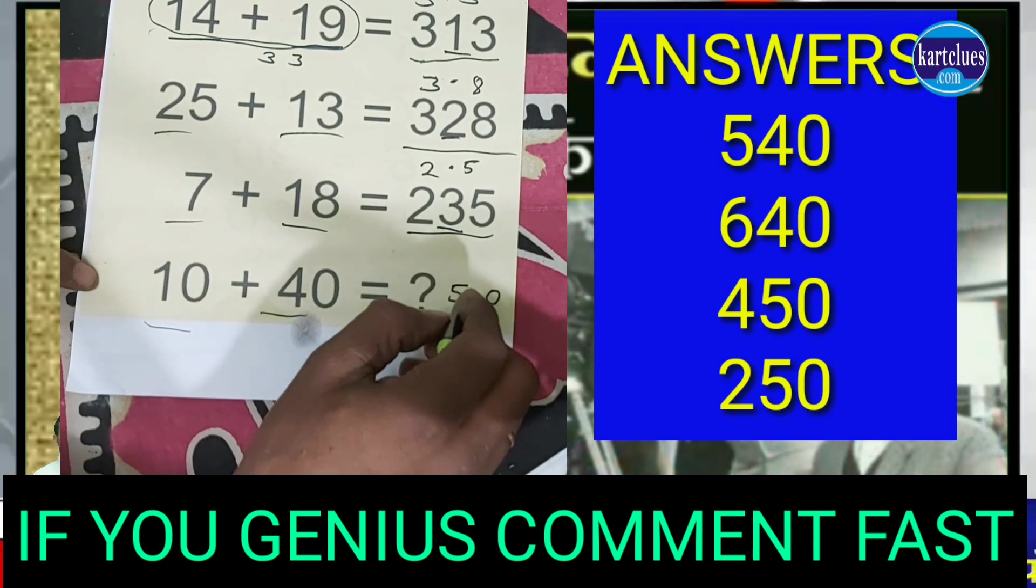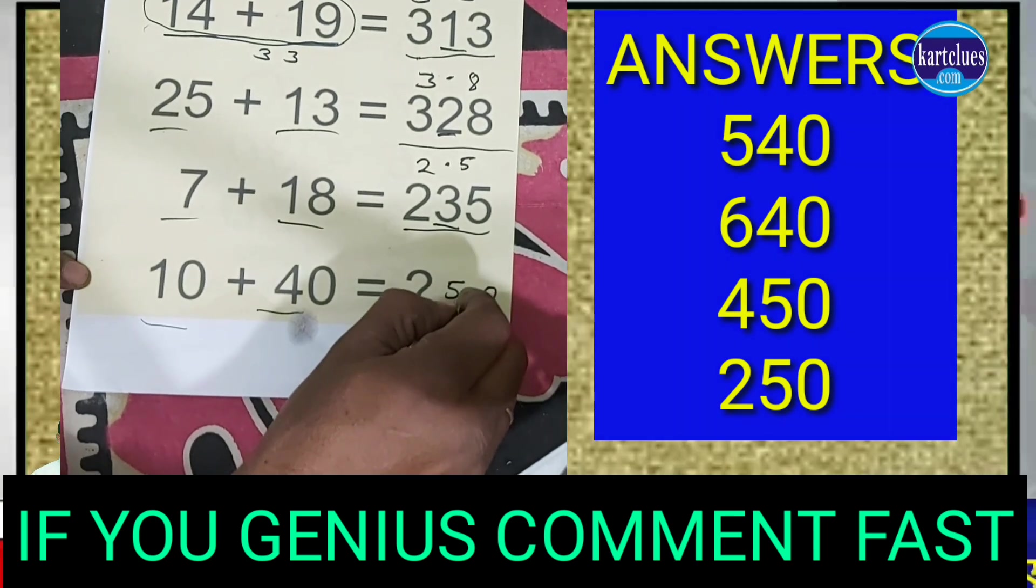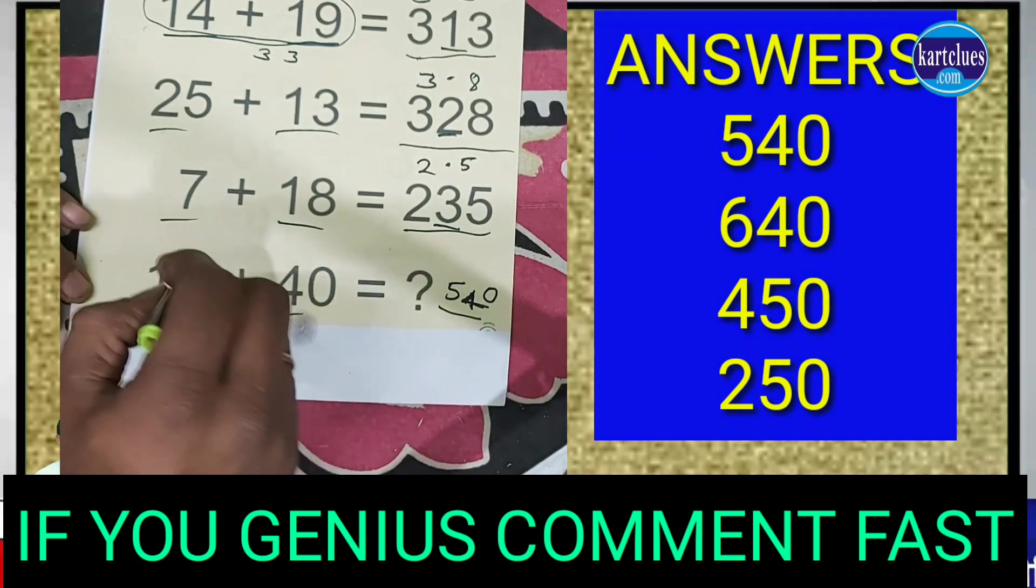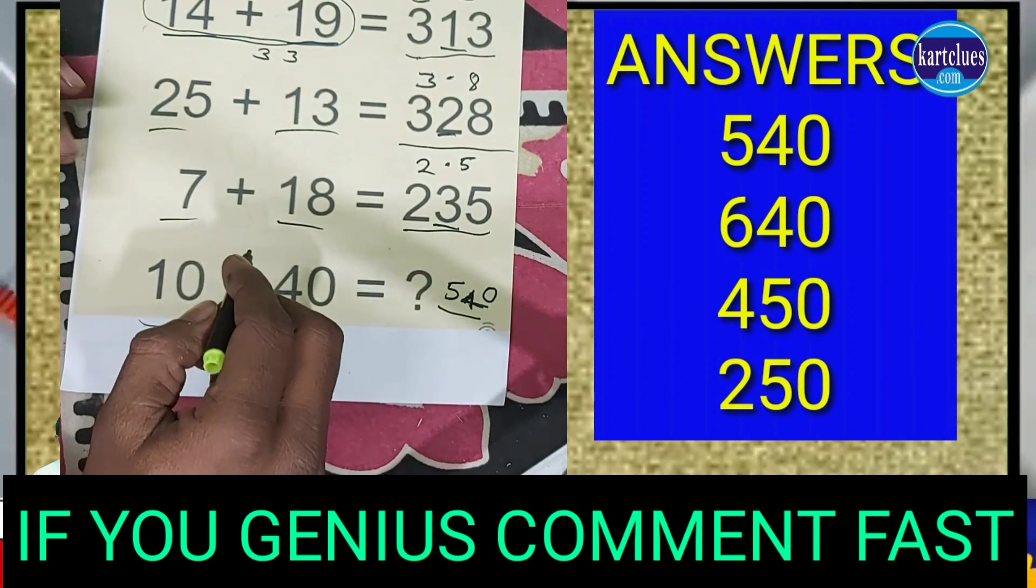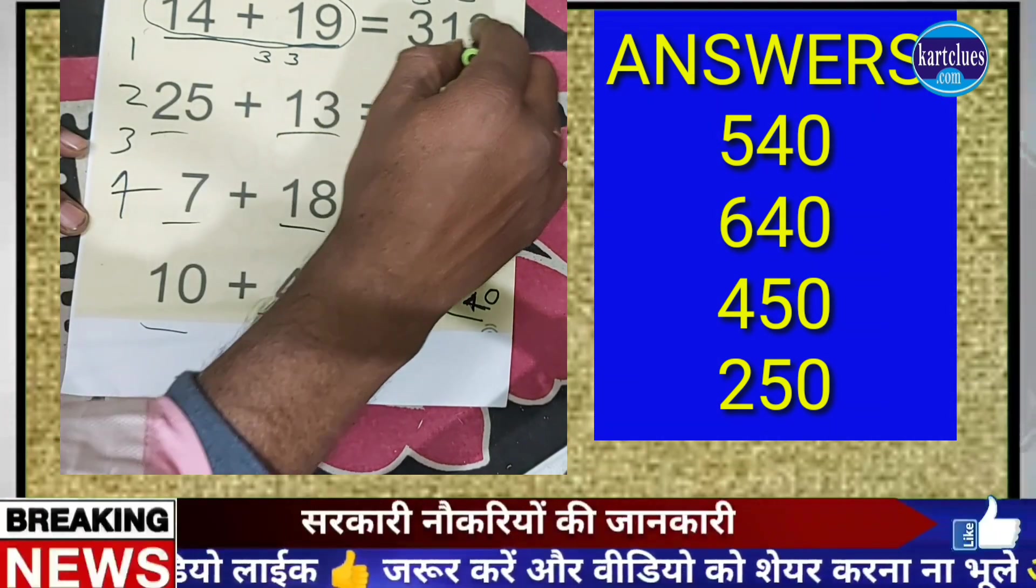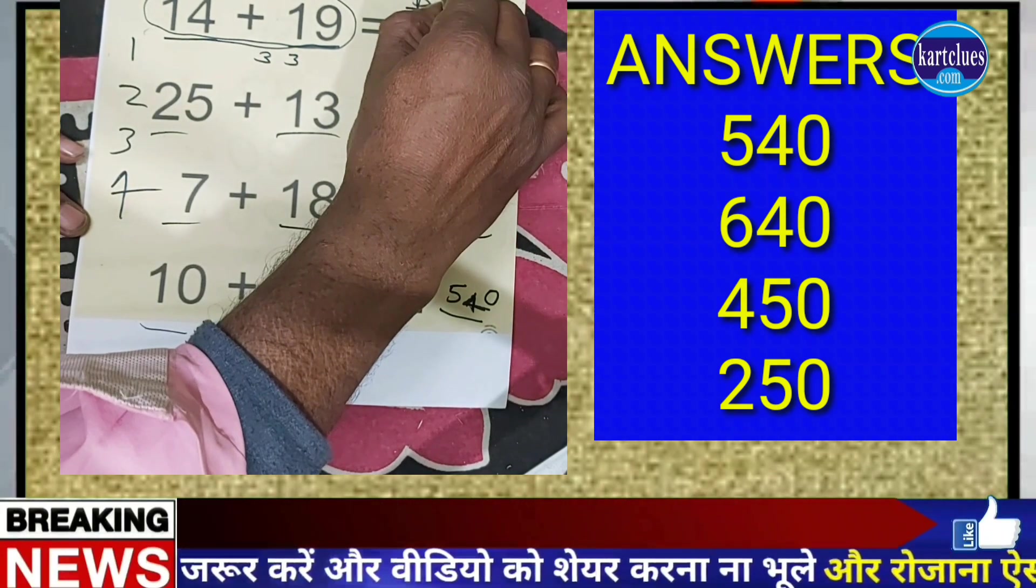Means you have to put here only 4. 540 is the answer. You understand? It comes like 1, 2, 3, 4 between the numbers - between the numbers 1, 2, 3, 4.